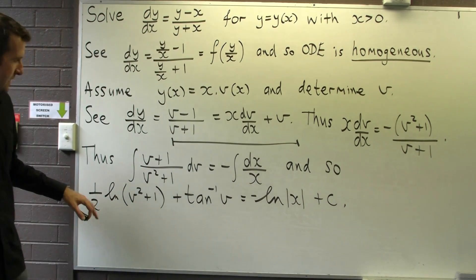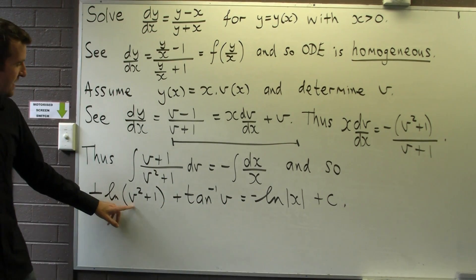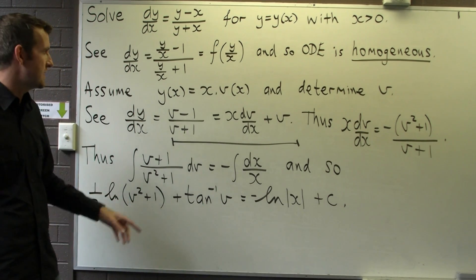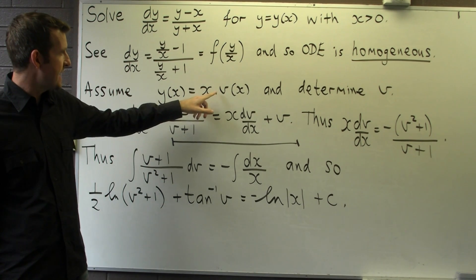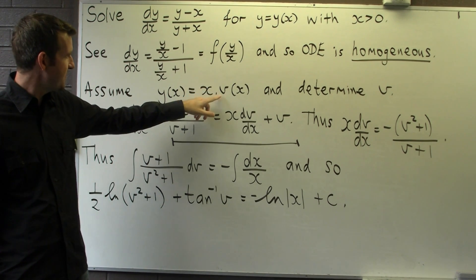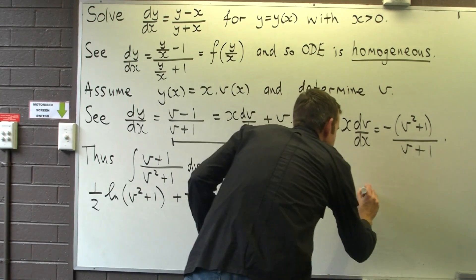Our solution here is in implicit form. What we want to do now is to switch these v's back to x's and y's. So, essentially, we can replace v with y on x.